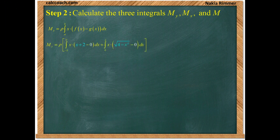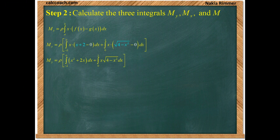From negative 2 to 0, f is the line x plus 2; from 0 to 2, f is the square root. Both have g of 0, so things simplify — we're subtracting 0. We take x times x plus 2 to get x squared plus 2x, and x times the root to get that expression. One integral runs from negative 2 to 0 and the other from 0 to 2. Now we find the antiderivative.